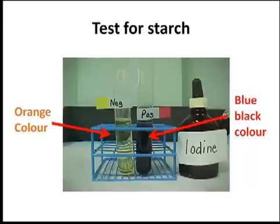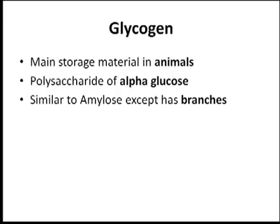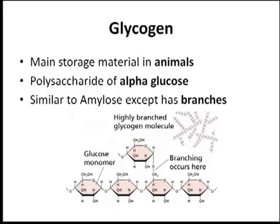And glycogen? Glycogen is the main storage material in animals, and it is another polysaccharide of alpha-glucose. Its structure is very similar to amylopectin, except it also has branches where 1-to-6 glycosidic bonds are formed. It's also a very compact molecule, so it's good for storage.